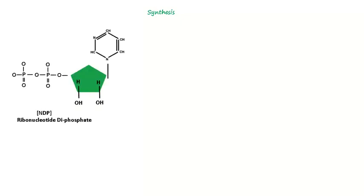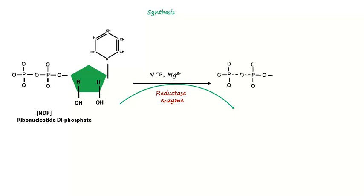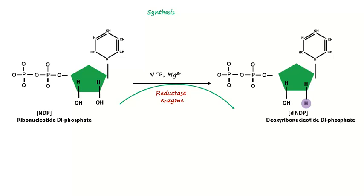There is a specific reaction that transforms ribonucleotides into deoxyribonucleotides. The ribonucleotide starts the reaction under the effect of a reductase enzyme. The enzyme, a triphosphate macroergic compound, and magnesium will remove one oxygen from the hydroxide group of the second carbon position and produce a deoxyribonucleotide. During the reaction, the reductase enzyme co-effects a hydrogenated protein, removing two hydrogens from it and creating a bisulfide bond at the protein.